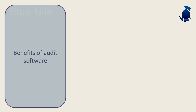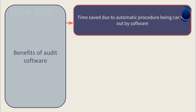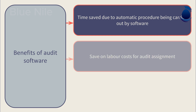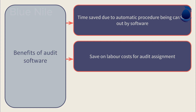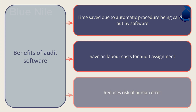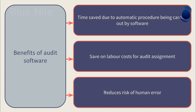Audit software has many benefits, including saving time on the audit due to automatic procedures being carried out by the software. It can also save on labour costs for the audit assignment, and it reduces the risk of human error due to the software automatically performing some audit procedures.